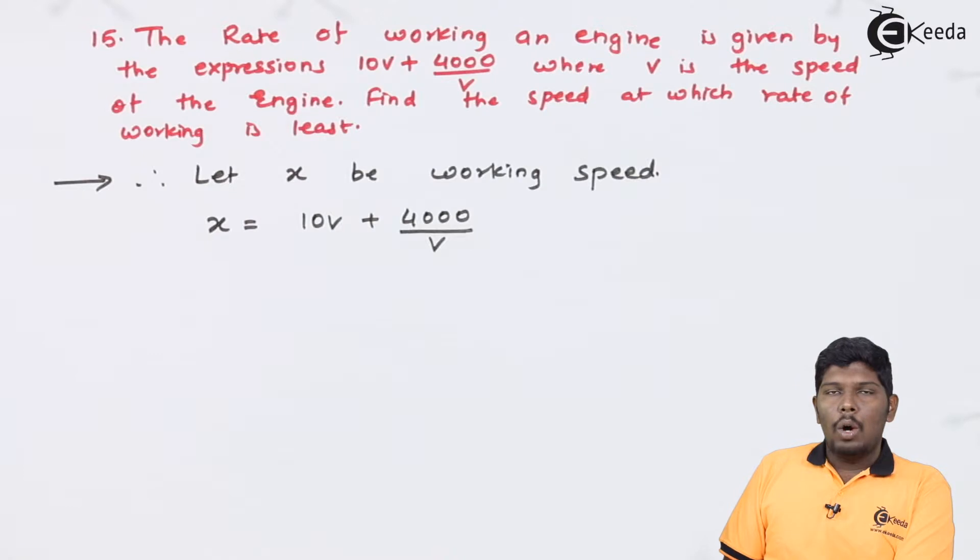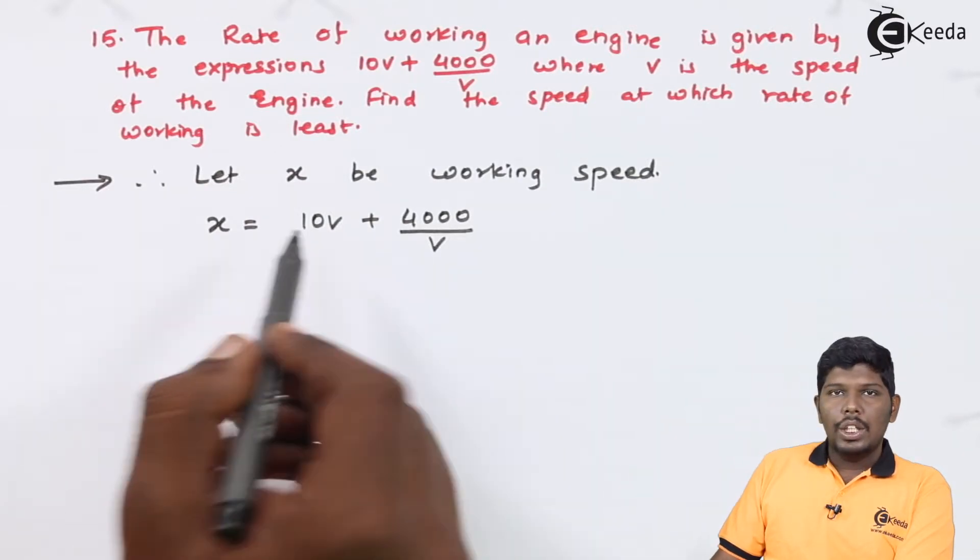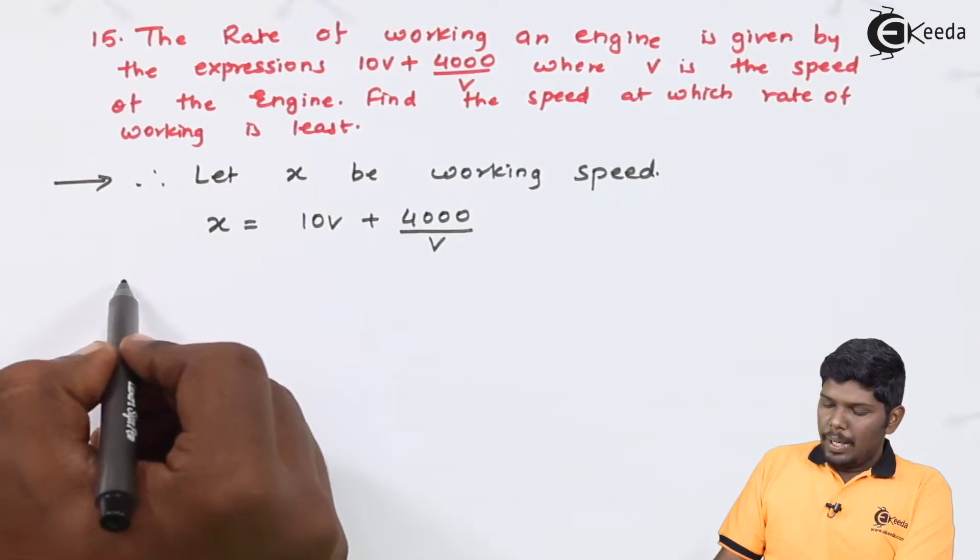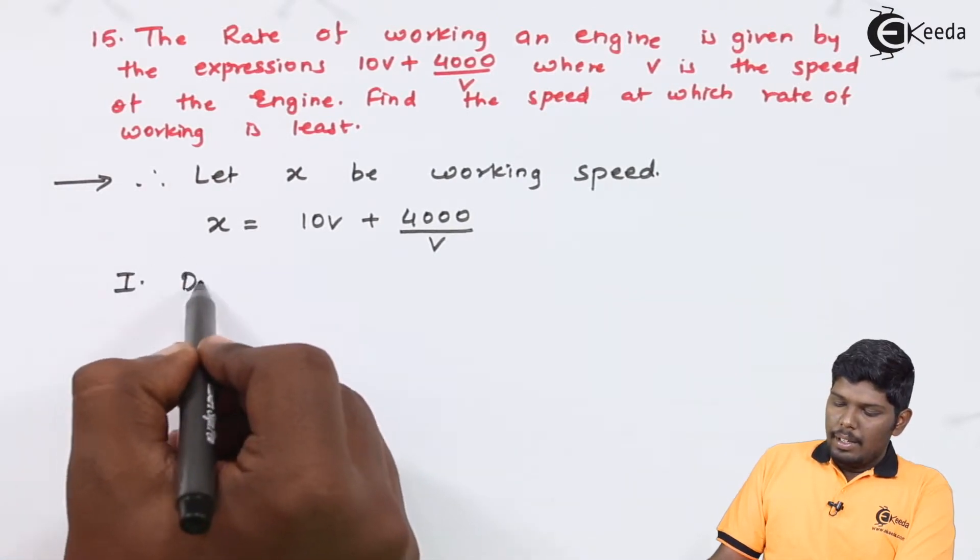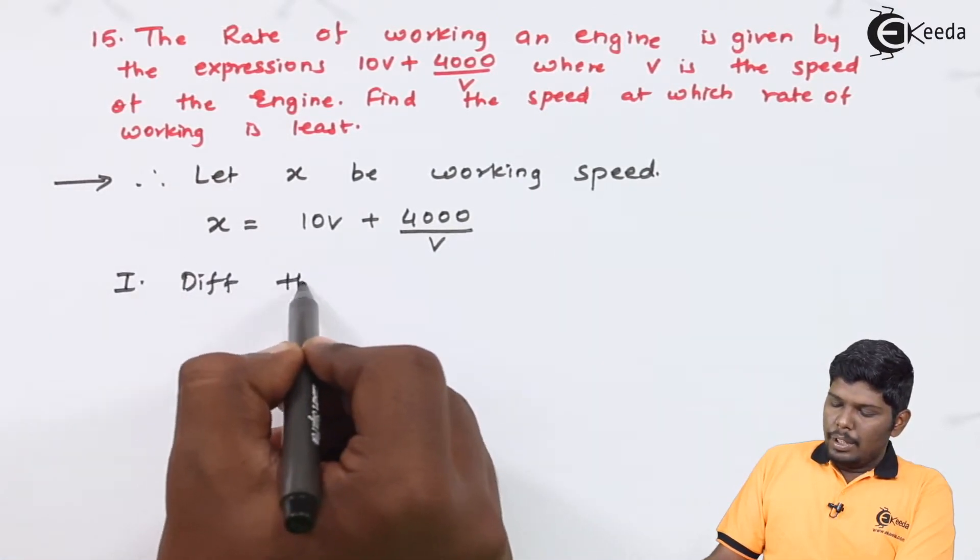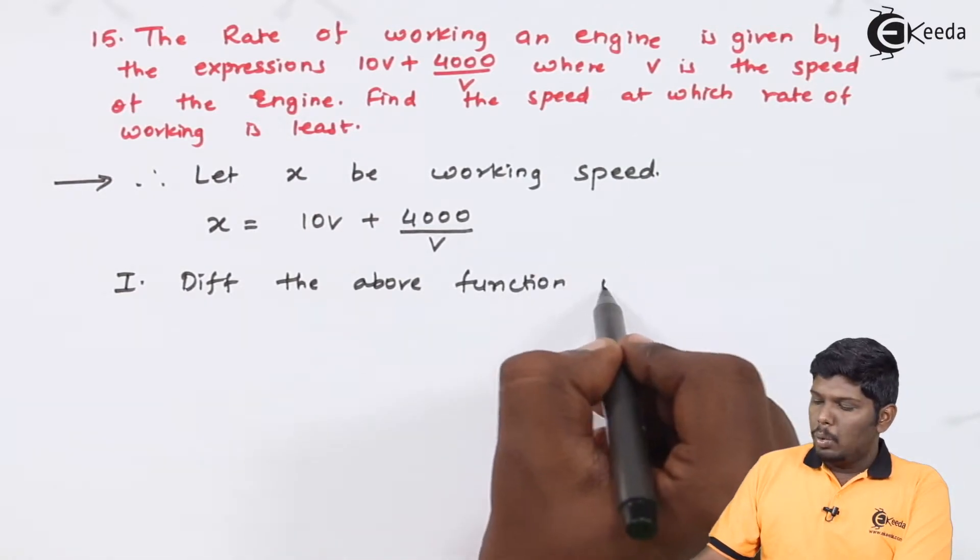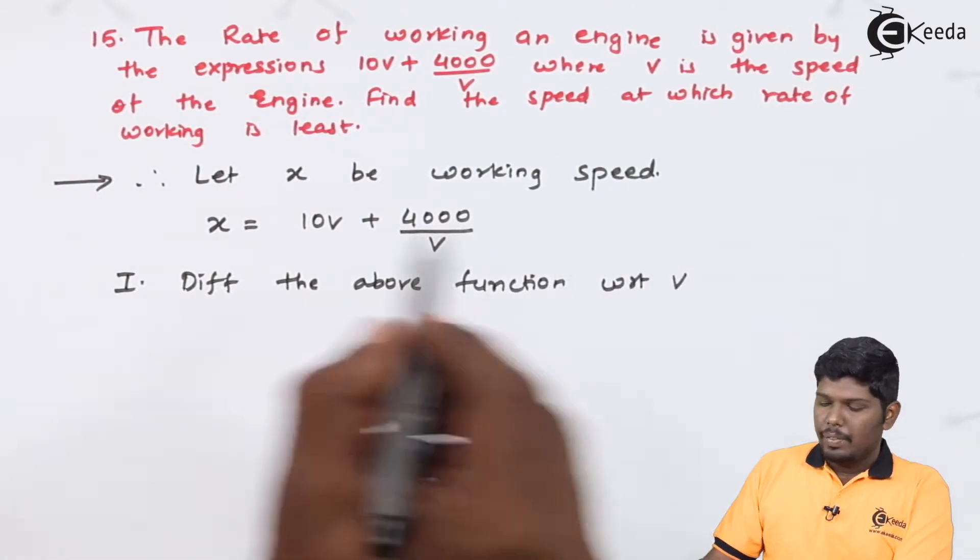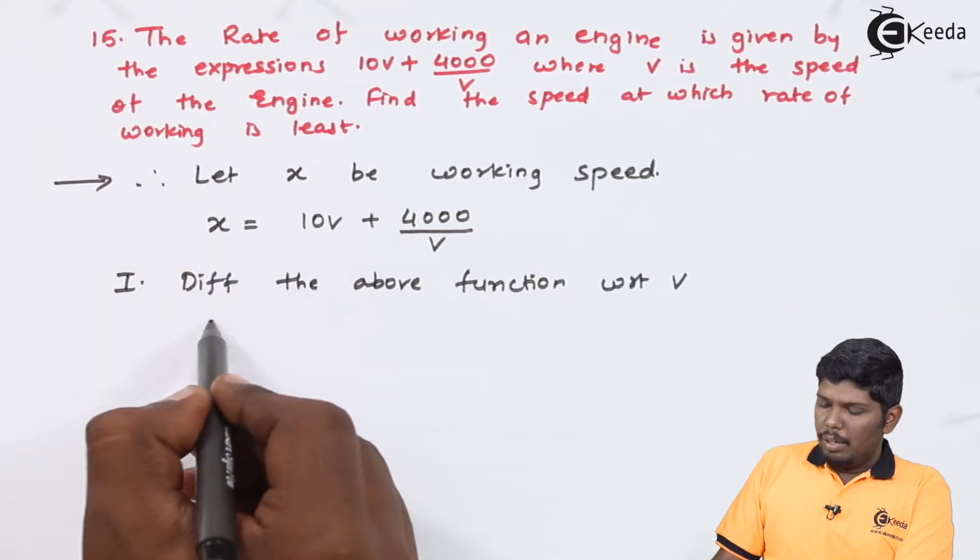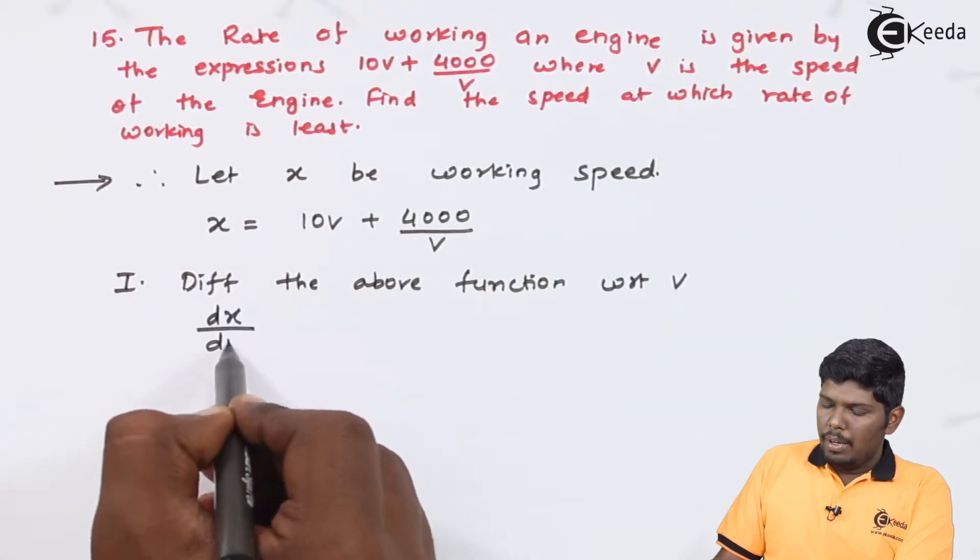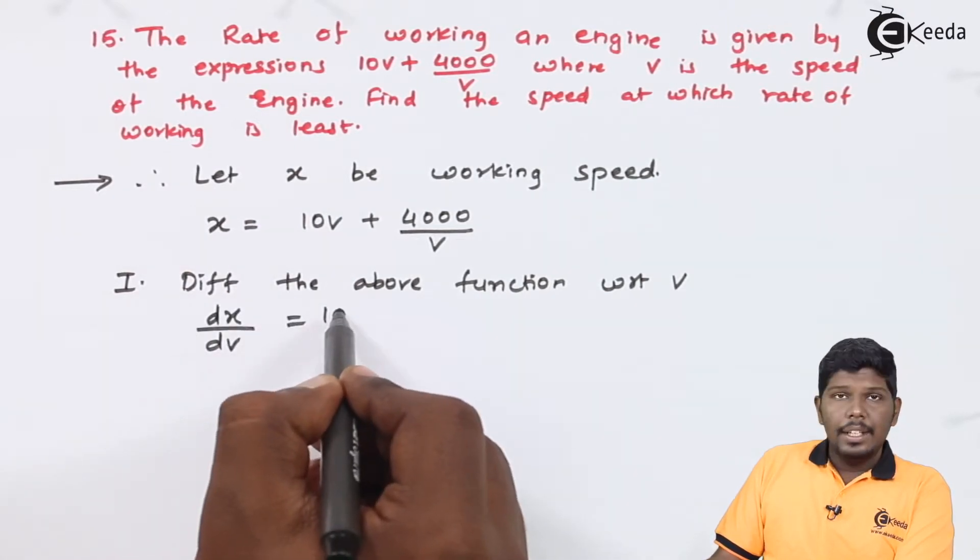Let us see how to check whether the given equation is maximum or minimum. Step number 1, differentiating the above function with respect to V. Derivative of X will give you dX upon dV, and derivative of V will be 1 plus 4000 into derivative of 1 upon V.